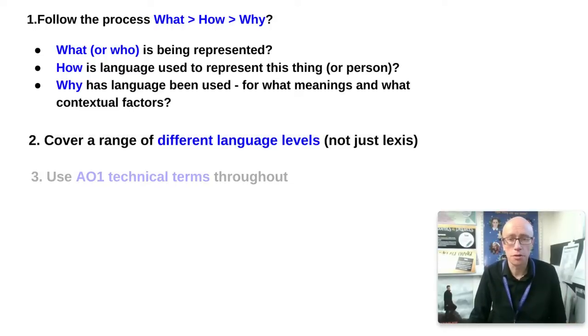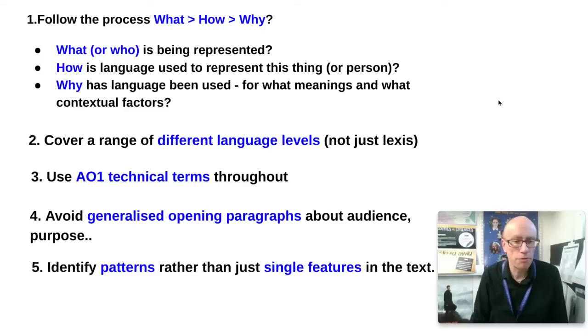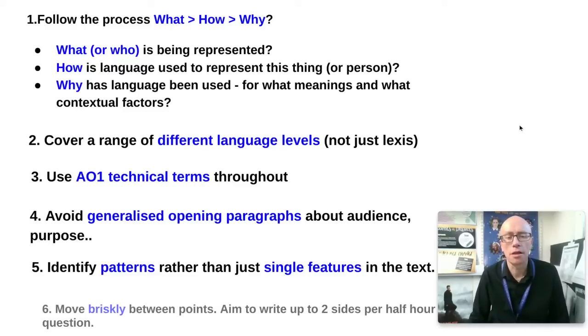You need to be covering a range of different language levels, not just doing about lexis. You need to be showing off, you need to be showing off that you are an A level student, not just some GCSE student that snuck in by accident. And therefore use all sorts of technical terms all the way through - things like deontic modal auxiliary verbs or first person plural pronouns. So don't be shy about using your technical terms. You want to avoid having a sort of generalized opening paragraph that gives an overview about audience and purpose - no no no, you want to dive straight into that swimming pool. Don't even get changed, I would say, just dive straight in there with your first language point and your first thing of representation. And as I've said before, it's about identifying patterns rather than looking at just single features. You've got to move quite briskly because you've only got a small amount of time, but you know you've really got to practice writing two sides per half hour, get through enough material.